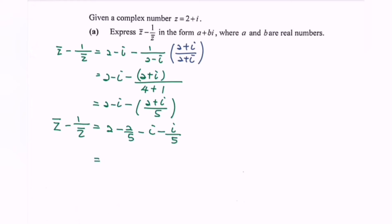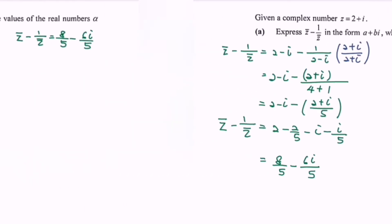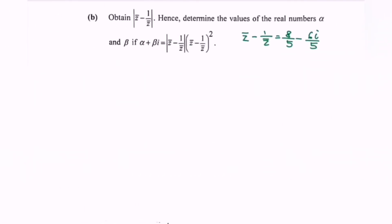So as a conclusion, we will have 8 over 5 minus 6i over 5. Kindly refer to part (b).